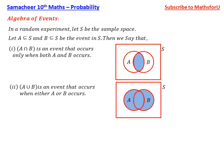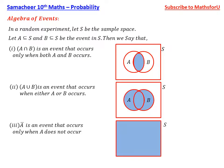The blue will be the entire portion representing A union B. A bar is an event that occurs only when A does not occur.